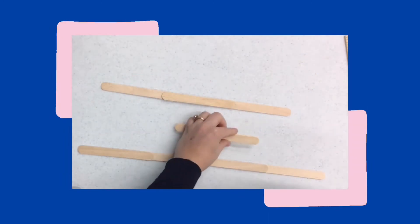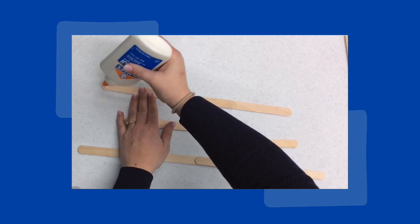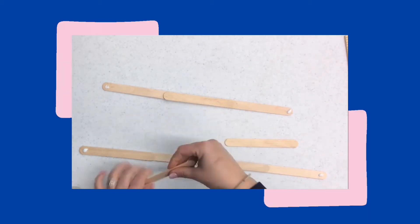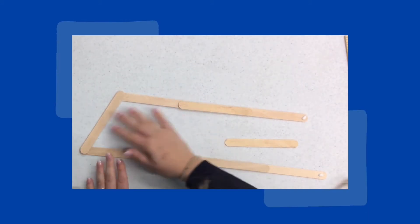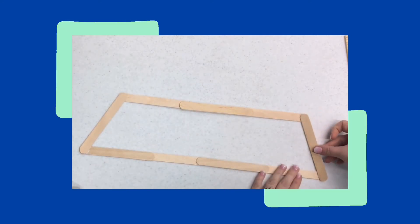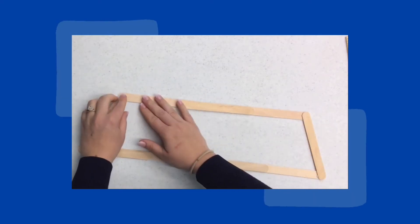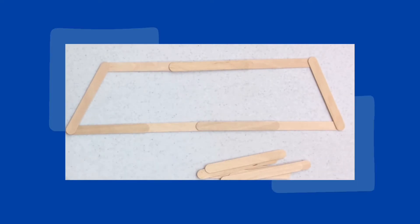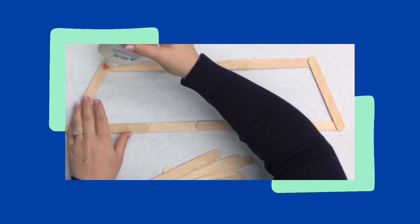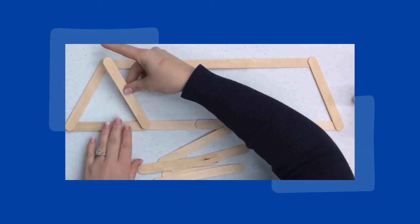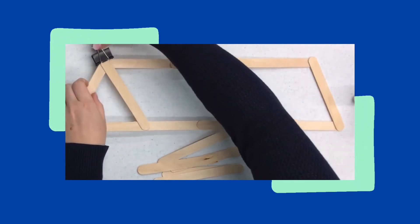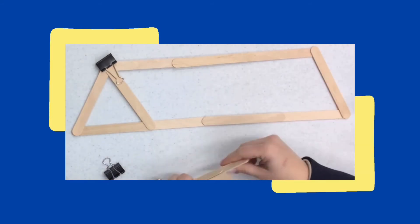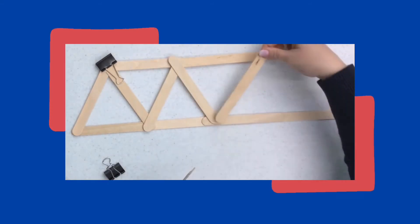In step two, I used two sticks on the ends to connect the three and the four craft sticks I glued together earlier — this creates the base of your frame. Now that I have a base, I'm placing sticks onto the frame to create six equal-sized triangles, which helps reinforce the strength of your bridge. Once I have them in place with a dollop of glue, I use a binder clip to make sure the triangles won't move.